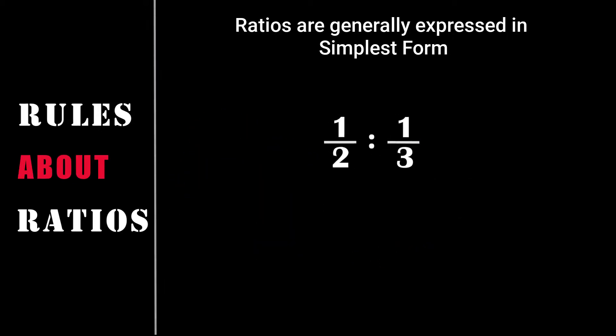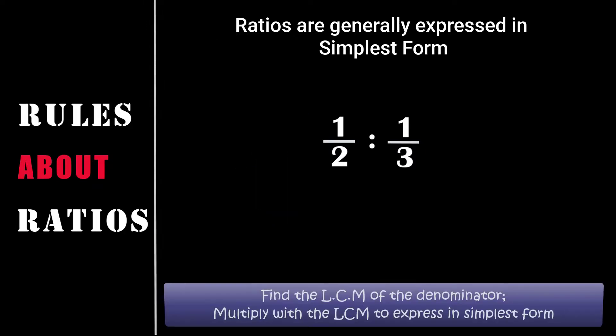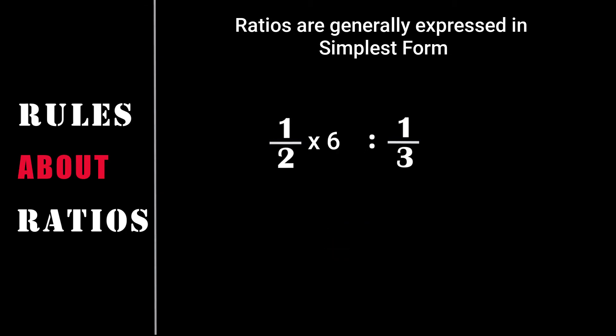What do we do when we have ratios in fractional form? How do we represent them in the simplest form? Very simple. We need to take the LCM of their denominator and multiply each fraction with the LCM to represent in the simplest form. For example, let's take the ratio 1 by 2 is to 1 by 3. This is a fractional form of ratio. We need to calculate the LCM of their denominators. So the LCM of the denominator 2 and 3 is 6. Once the LCM is calculated, we take the first fraction and multiply it with the LCM, and then take the second fraction and then multiply with the LCM. Now what do we get? We get 3 is to 2. This is how a fractional form of ratio is converted to its simplest form.